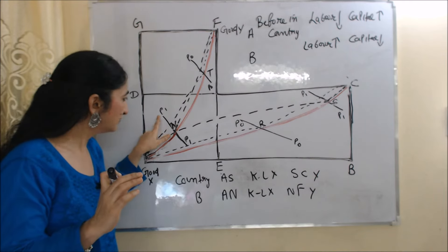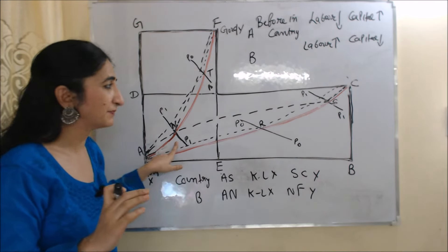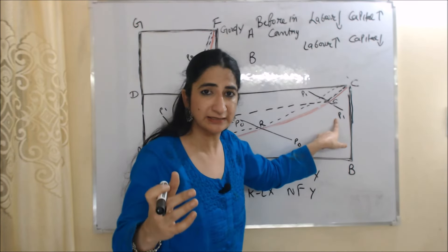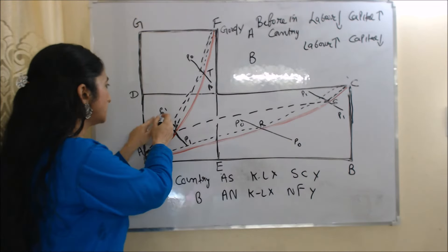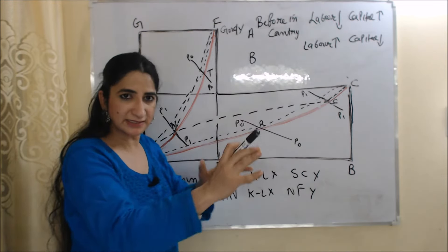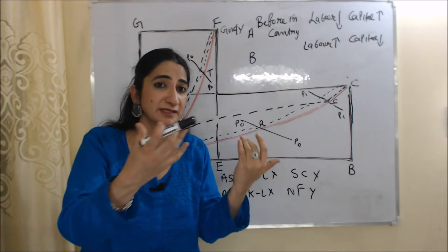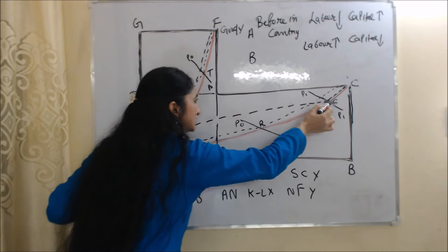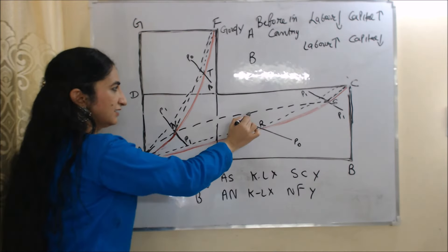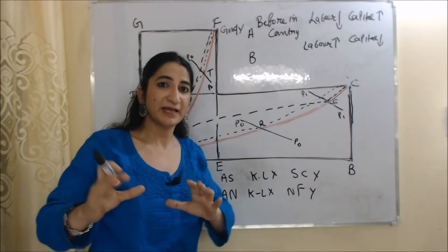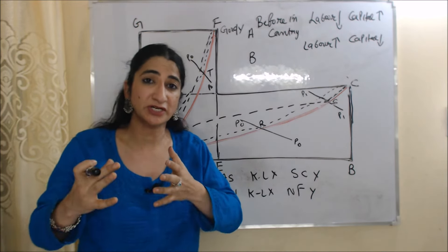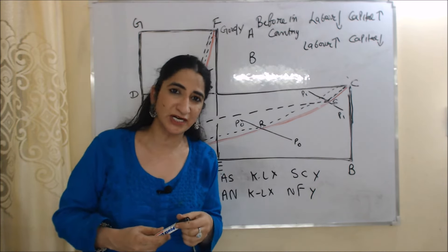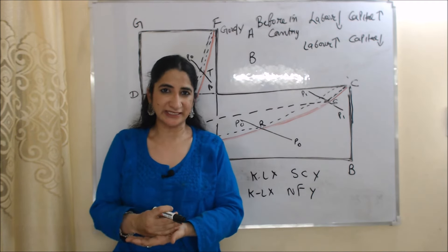This same situation is shown in the final diagram. N is the after-trade point of country B and P1-P1 is the factor price line of country B. S is the after-trade point of country A and P1-P1 is the factor price line of country A. The slope of this P1-P1 line is exactly the same, which represents that factor prices in both countries are the same — wage rate and interest rate are equal in both countries. Also, points N and S lie on the same line, which represents that factor prices in both countries are equal. This is our Factor Price Equalization theorem: free trade makes factor prices equal in those countries which are doing trade with each other.